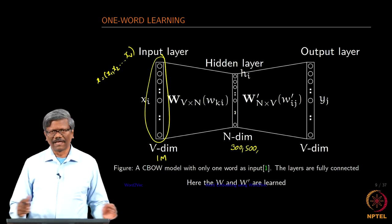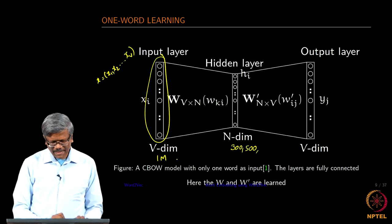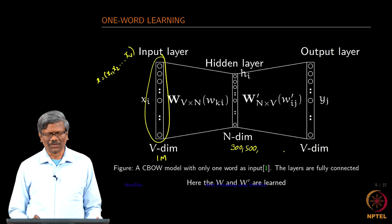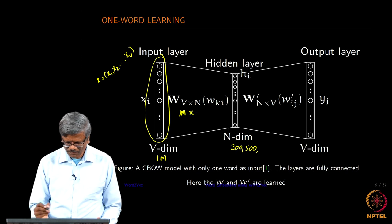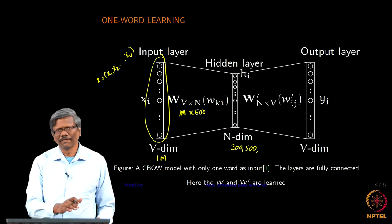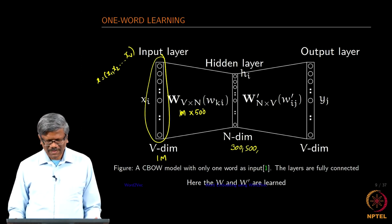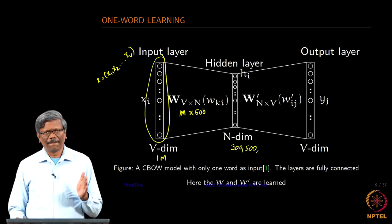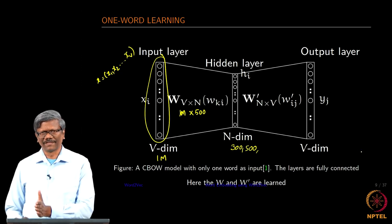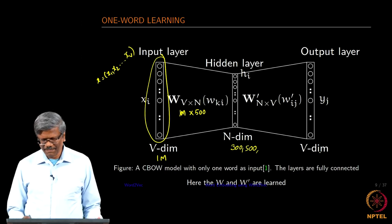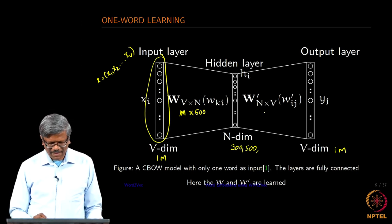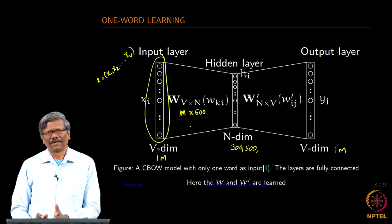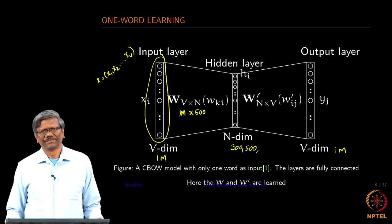That means hidden layer will have 500 elements and we will be connecting 1 million to 300 or 500. That many weights you will see. That means this is 1 million into 500, we will have 500 million connections going. In the same fashion since the input layer and the output layer size is going to be the same both will have the same V dimension. If you are using 1 million this also would be 1 million again. The number of elements in the matrix W dash here would be 500 by 1 million.